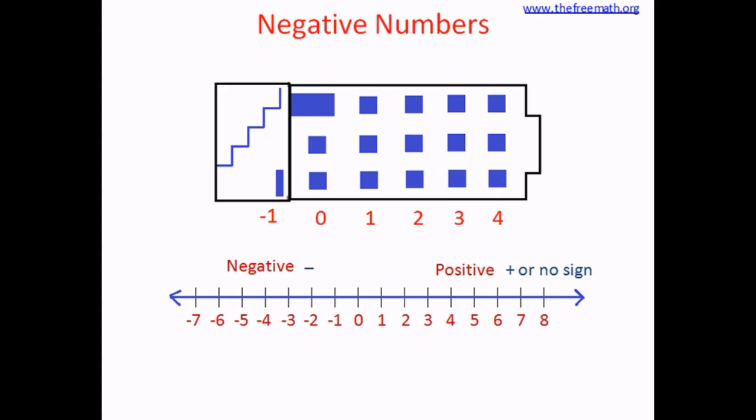Numbers bigger than zero are on the right-hand side — those are positive numbers. Numbers smaller than zero are on the left-hand side — those are negative numbers. As you go from left to right the value increases, and as you go from right to left the value decreases. So one is smaller than five, zero is smaller than one, and negative one is smaller than zero.